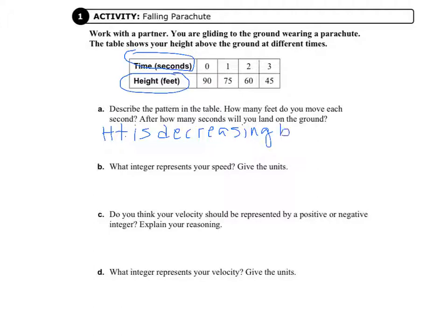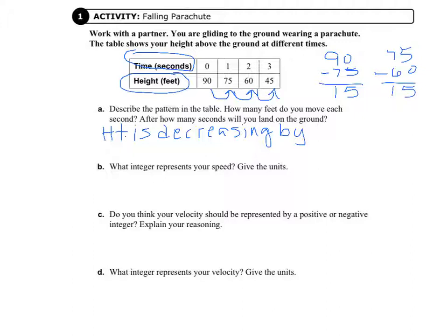We need to figure out by how much the height is decreasing. Looking at the change between each value: 90 minus 75 equals 15, and 75 minus 60 equals 15, and 60 minus 45 equals 15. So the height is decreasing by 15 feet every second — we are moving 15 feet every second.